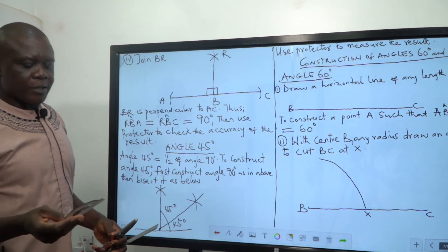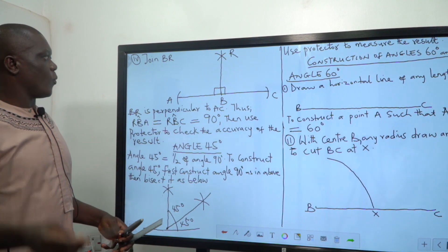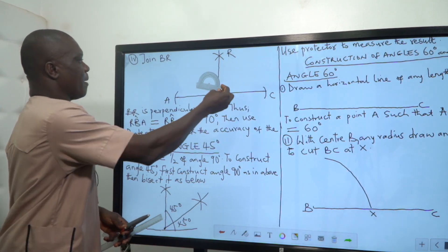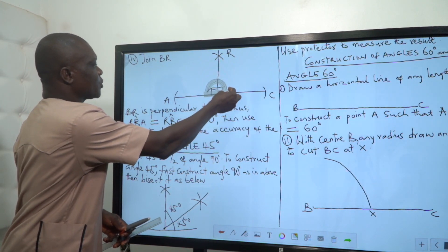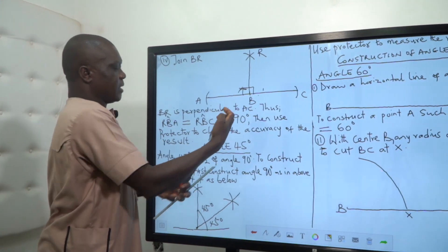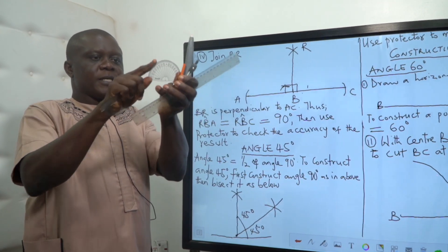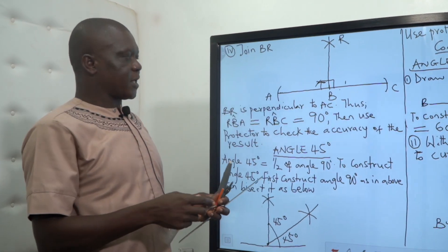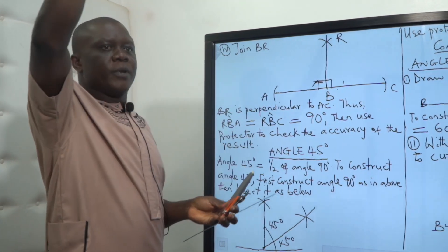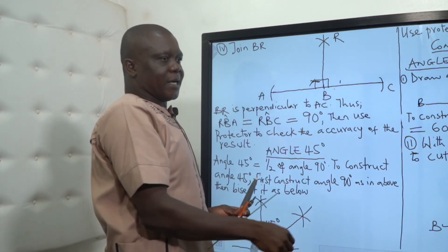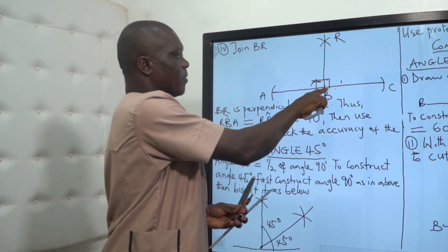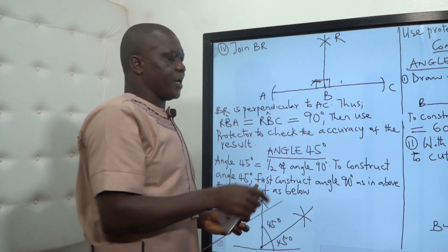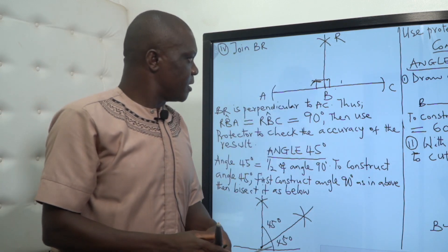You can see it here. If I want to know whether my result is correct, I will use a protractor like this and place it and ensure that this line you are seeing here covers the vertical line I have constructed. You will see that it will be straight to angle 90, which means that this angle here is 90. This angle here is 90 degrees.